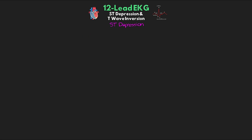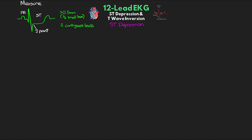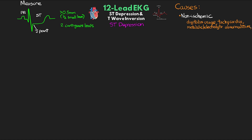When it comes to measuring ST depression, we want to measure the ST segment in relation to the PR segment. We measure from the J point, and anything more than 0.5 millimeters — so half a small box — in at least two anatomically contiguous leads would be considered ST depression. Some non-ischemic causes include therapeutic digitalis usage, tachycardia, metabolic or electrolyte abnormalities, especially hypokalemia, as well as some people who just have normal ST depression present, although this is usually going to be less than one millimeter.